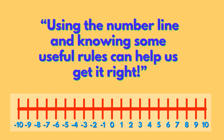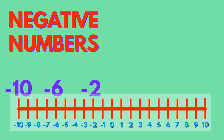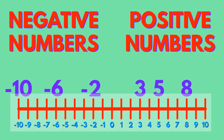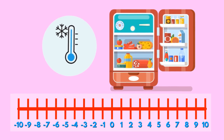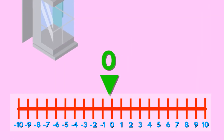Negative numbers are less than zero and they are always accompanied by a minus sign. Positive numbers can be shown with a plus sign, but generally, if neither sign is displayed, it's assumed the value is positive. We use negative numbers every day — freezers use negative numbers to show the temperature is less than zero, lifts use them for floors below ground level, and your bank account shows any money taken out and overdrafts as negative numbers.